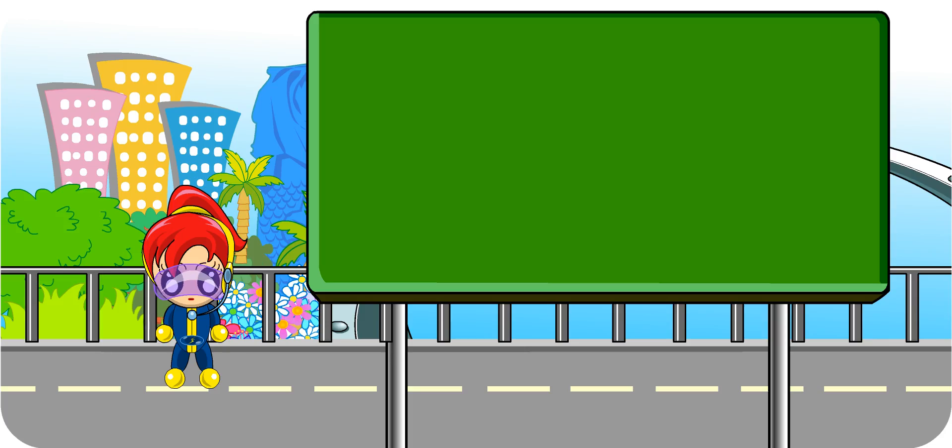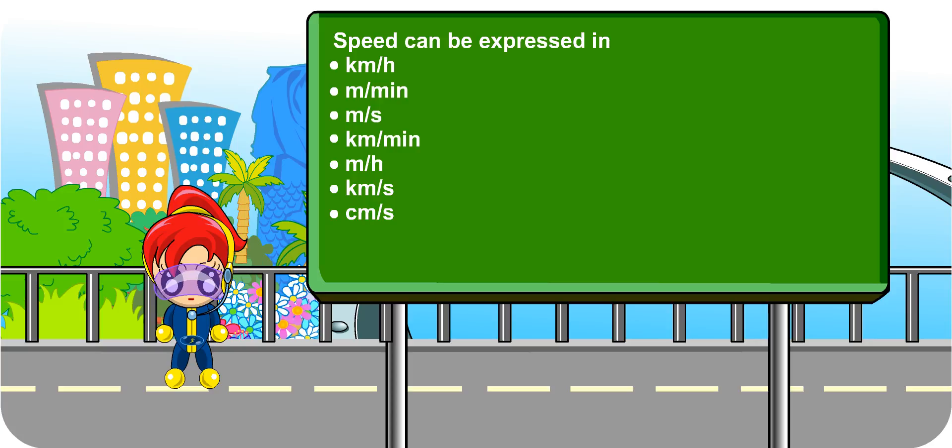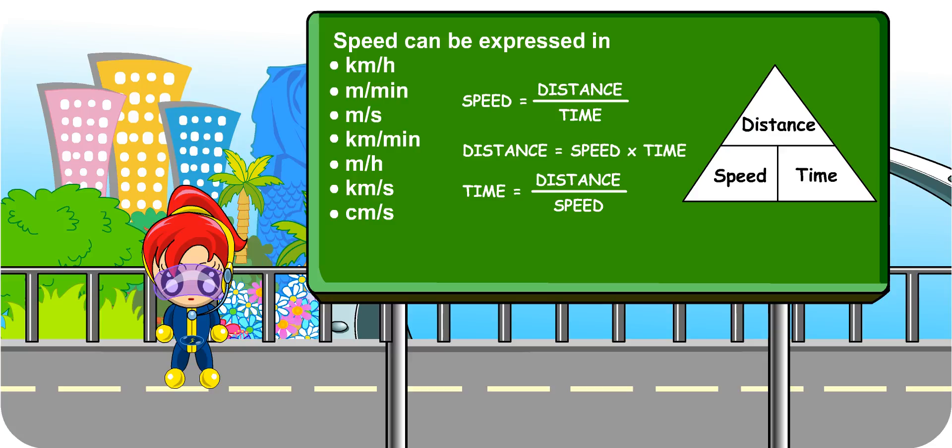Let's summarize the lesson. Speed can be expressed in several units. Kilometers per hour, meters per minute, and meters per second being the most commonly used. There are also other less commonly used expressions for speed, like kilometers per minute, meters per hour, kilometers per second, and centimeters per second. How are distance, speed, and time related, Turbo Girl? Speed is distance divided by time. Distance is speed multiplied by time. Time is distance divided by speed. Well done! We can make use of this triangle to help us remember the three formulas.